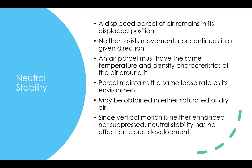For neutral stability, the displaced parcel of air will remain in its current position — it won't resist movement nor continue in a given direction. An air parcel must have the same temperature and density characteristics as the air around it to be neutrally stable. It will maintain the same lapse rate as its environment, and since vertical motion is neither enhanced nor suppressed, neutral stability will have no effect on cloud development.